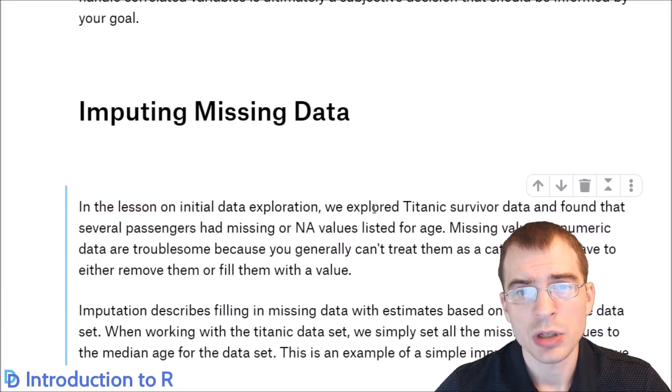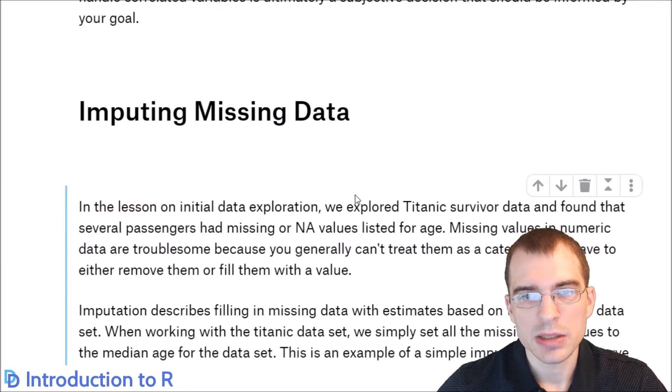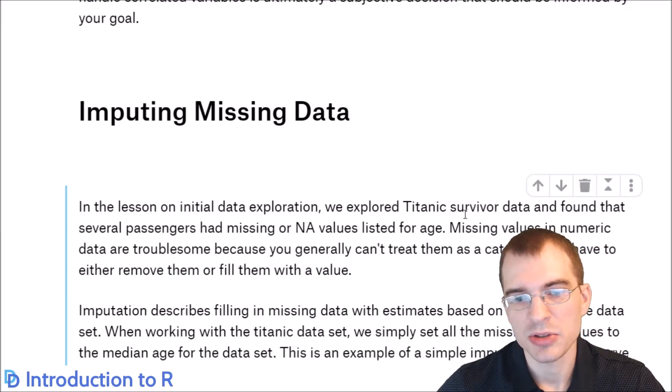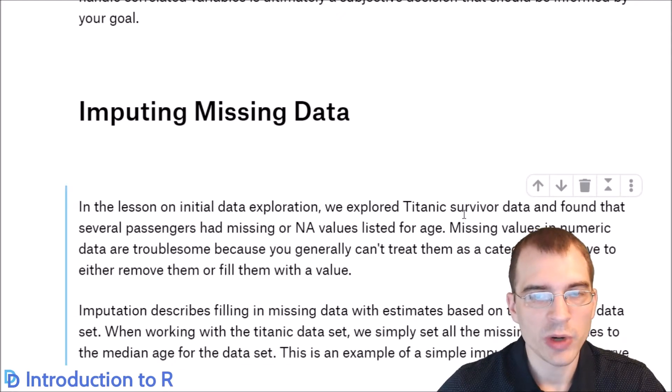Another thing to consider when you're working with numeric data is whether you have any missing values. In the earlier lessons when we were working with the Titanic training data, we saw that there were missing values in the age variable. In that case, we just decided to fill those missing values with a normal value, which was the median. You could also use the mean. But there are other ways of imputing missing data.